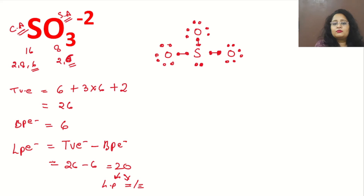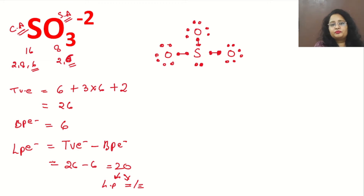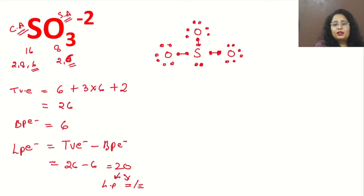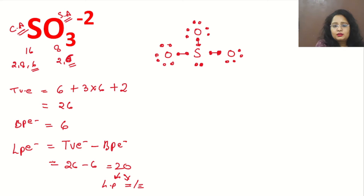All three oxygens and sulfur have complete octets — but is this structure correct? No, for two reasons. First, we still have the 2− charge to place, and if all octets are full there's no place for it. Second, sulfur never shows a covalency of 3 — it shows covalency of 2, 4, or 6. So showing covalency of 3 here is wrong. This structure is incorrect.